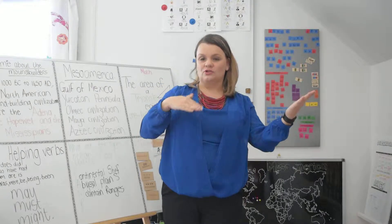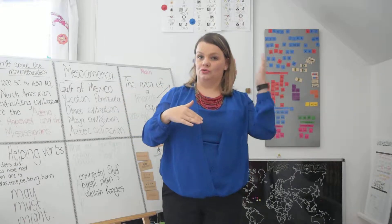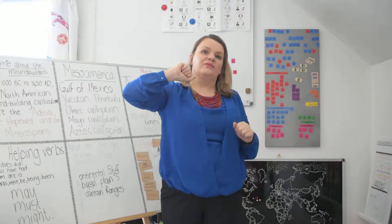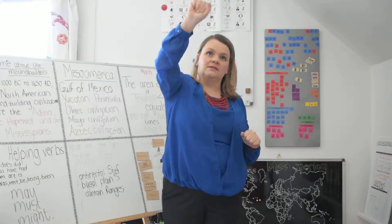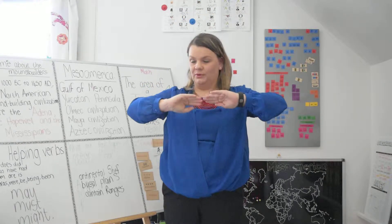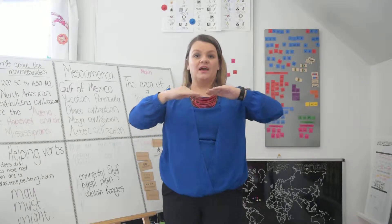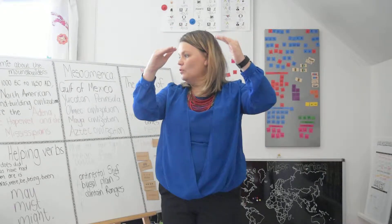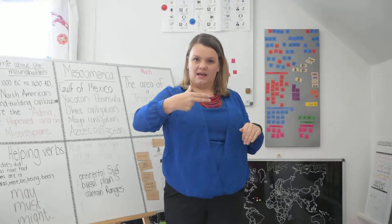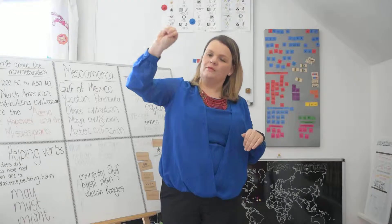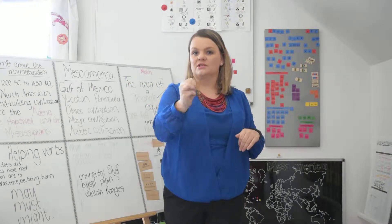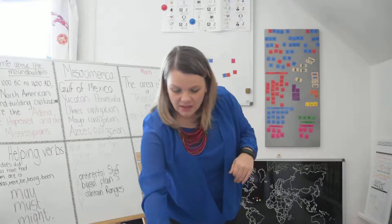For 1000 B.C. to 1450 A.D. we are going to do this hand motion. Then three North American — we've shown this for North America, that's the position on the map. North American Mound Building Civilizations: this is an A for Adena, this is an H for Hopewell, and this is an M for Mississippians. And we're going to do it like a river, the Mississippi River.